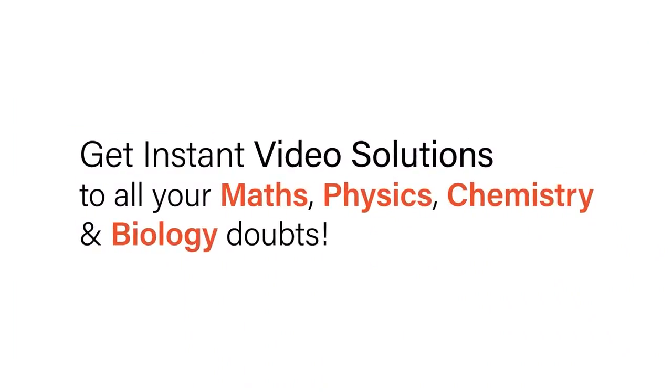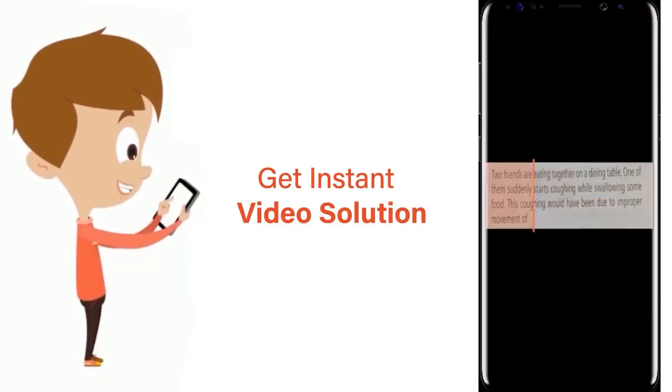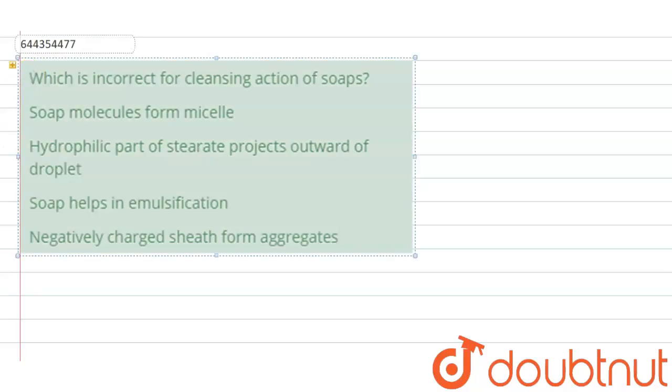With Doubtnut, get instant video solutions to all your maths, physics, chemistry and biology doubts. Just click the image of the question, crop the question, and get instant video solution. Download Doubtnut app today. The question is: which is incorrect